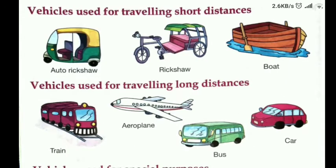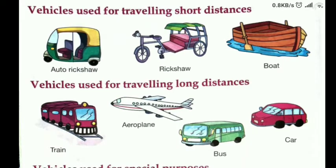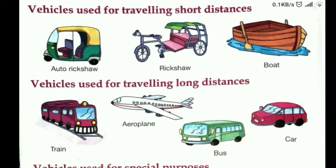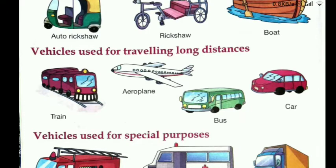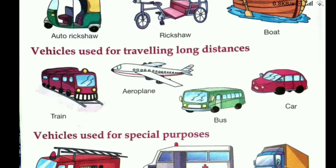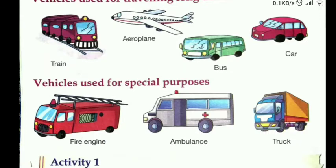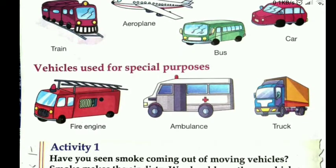We'll talk about vehicles used for traveling short distances — yani ke jo short distances cover karne ke liye use karte hain: auto, rikshas, and boat. Vehicles used for traveling long distances — yani ke agar aapko kaafi door jaana hai, jaise train, aeroplane, bus aur car.